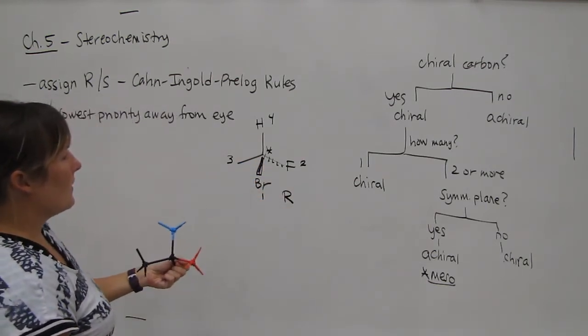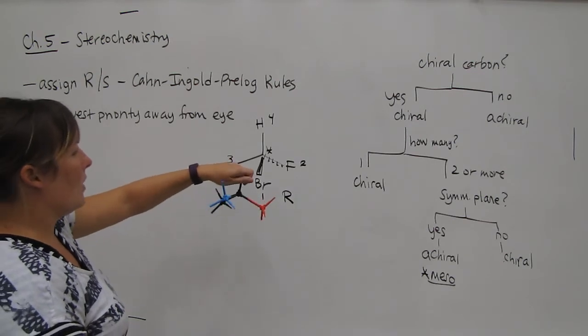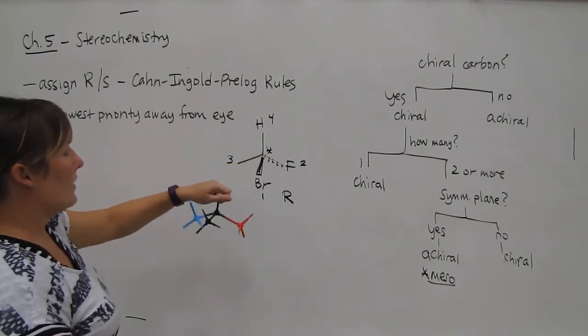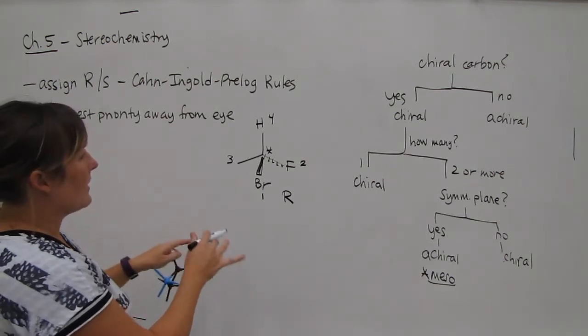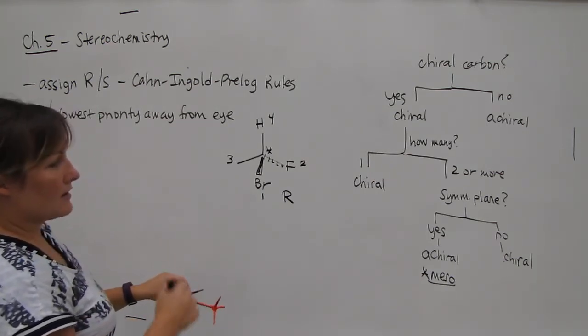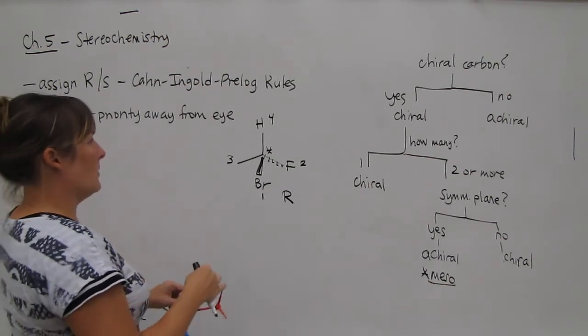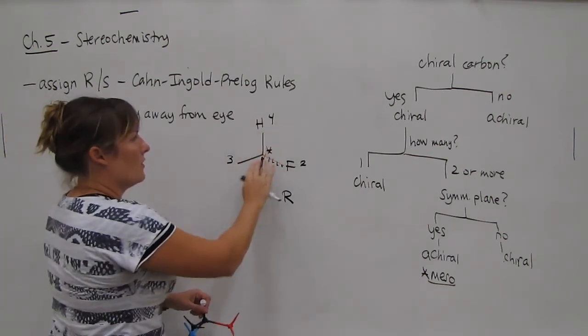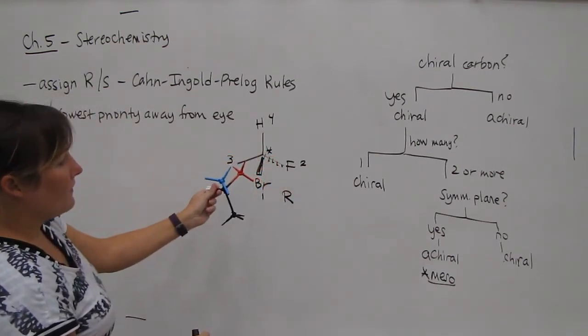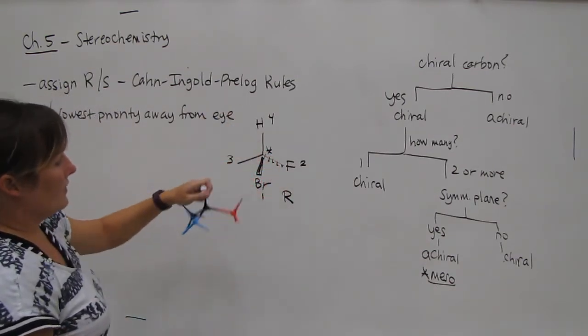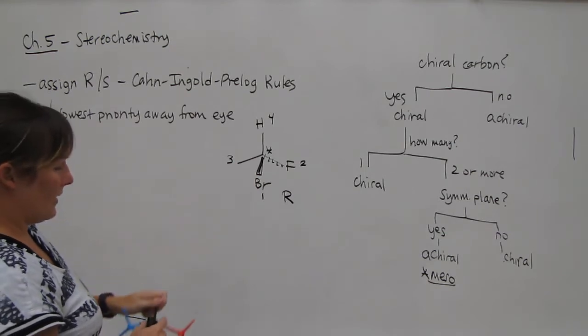For cases where it's not clear, just have a quick molecule that you can build. Otherwise, if you can assign 1, 2, 3 as is, you assign it. And if lowest priority is coming towards you, you do the opposite. And if lowest priority is any other direction, such as up or left, then it's best probably to build a quick molecule to check that chirality.